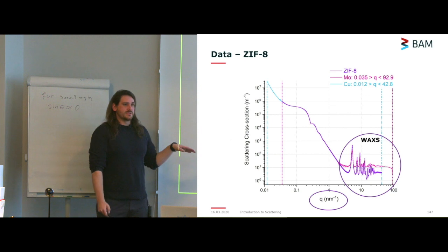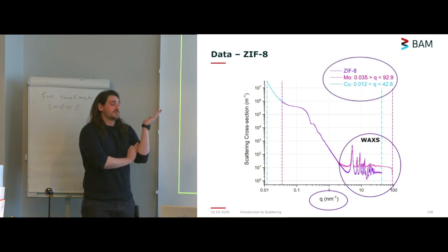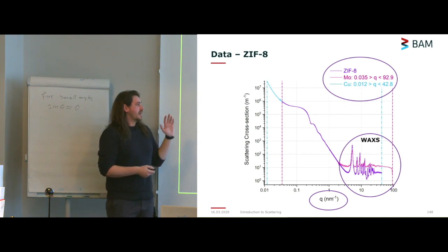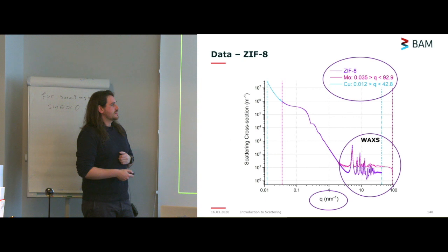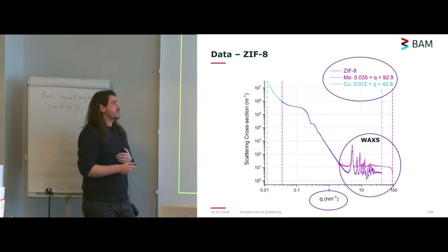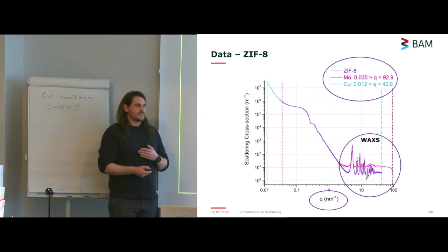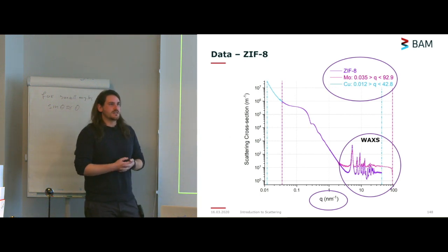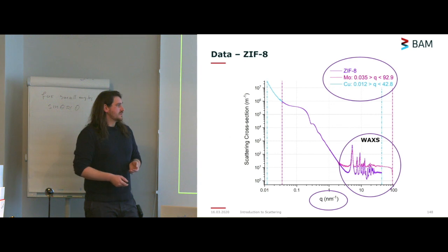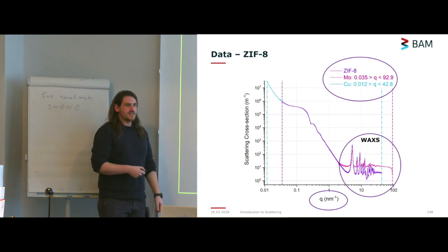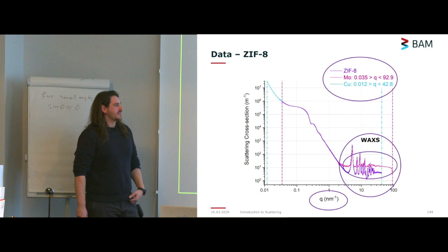We've covered those concepts. Looking at this data, we see the molybdenum part and the copper part, with a large purple overlap section when both sources are used. Using the molybdenum source gets you a little higher Q; using the copper source gets you a little lower Q. This is very useful depending on the sizes present in your sample — you get a lot of overlap which is also extremely useful. You'd expect molybdenum and copper data to line up nicely in Q.